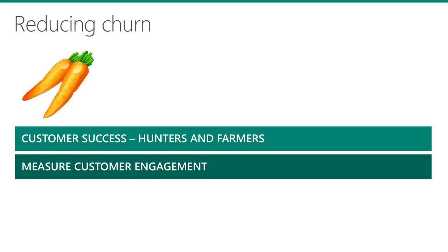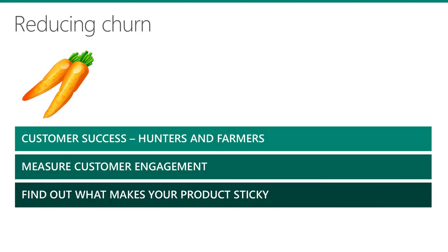One of the nice things about true SaaS solutions, as opposed to hosted or VM versions of non-premise software, is that you can actually measure how much of the product your clients are using, where they are running into trouble, or the functionality they never use. By measuring how much they use the product, you can get early warning signals on those that are most likely to leave. An extension of this is to really understand the functionality that makes people stay — what are the features they fall in love with and can't live without?